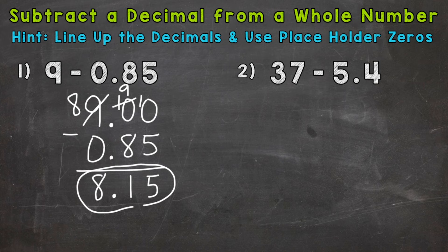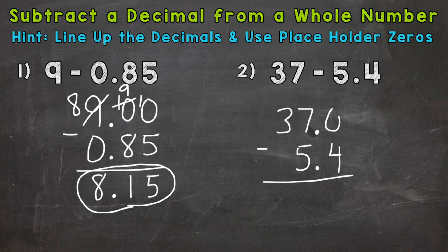So let's go to another example here, number two, where we have 37 minus five and four tenths. So the first thing we do, line up the decimals. And remember, the decimal comes after any whole number. So now we can line up the five and four tenths. And we can use a placeholder zero here. So both numbers go to the tenths place.